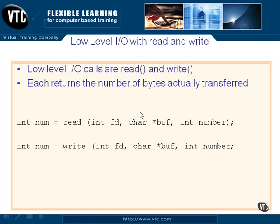Low-level I/O is pretty simple, basically. We're just putting characters out to a particular file descriptor or reading in from a file descriptor. The read and write calls look almost identical, and they're what the C programming language standard library uses to perform things like printf and scanf. Each of the calls, read and write, actually returns the number of bytes that they really transferred.